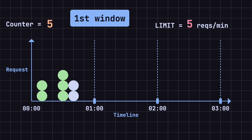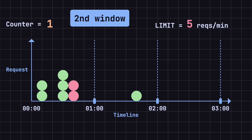At the 40-second mark, the system receives 2 more requests. The system sees that the total request count is 7, which exceeds the threshold, so these two requests are rejected. At the end of the first minute, the counter resets to 0. In the second minute window, at the 1-minute-and-40-second mark, the system receives 1 request. The request does not exceed the threshold, so it is processed. The counter records 1 request. At the 1-minute-and-50-second mark, the system receives 3 requests. The request count is still within the threshold, so all requests are processed. The counter now records a total of 4 requests. At the end of the second minute, the counter resets to 0.